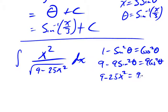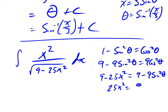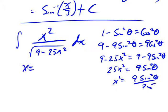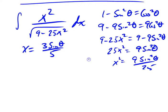If I multiply by 9, it's going to be 9 minus 9 sine squared theta equals 9 cosine squared theta. So I have 9 minus 25 x squared; I want that to be 9 minus 9 sine squared theta. So subtracting 9 and multiplying by negative 1: 25 x squared should equal 9 sine squared theta, which means x squared equals 9 sine squared theta over 25. My substitution is going to be x equals 3 sine theta over 5. Then dx equals three-fifths cosine theta d theta.